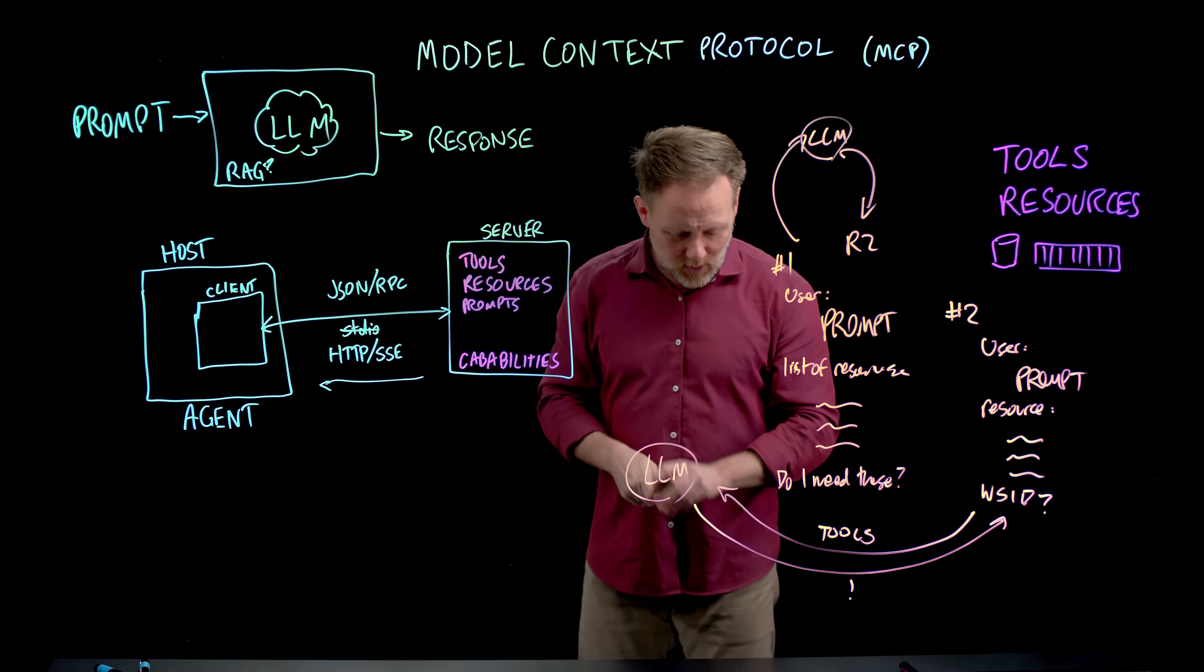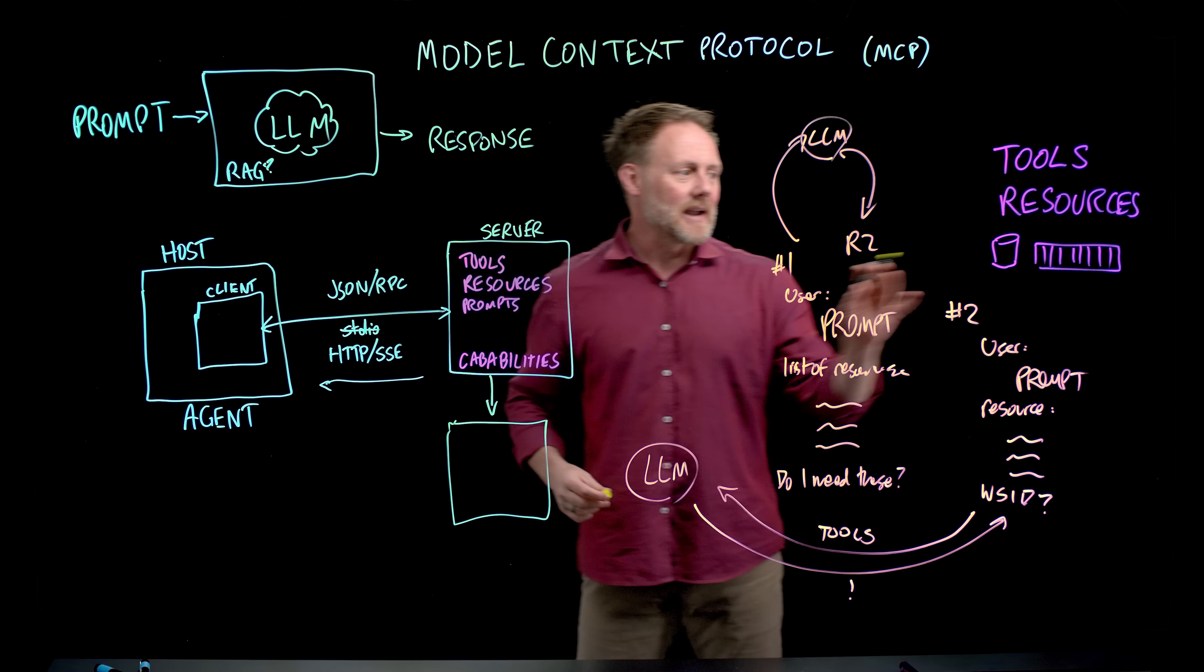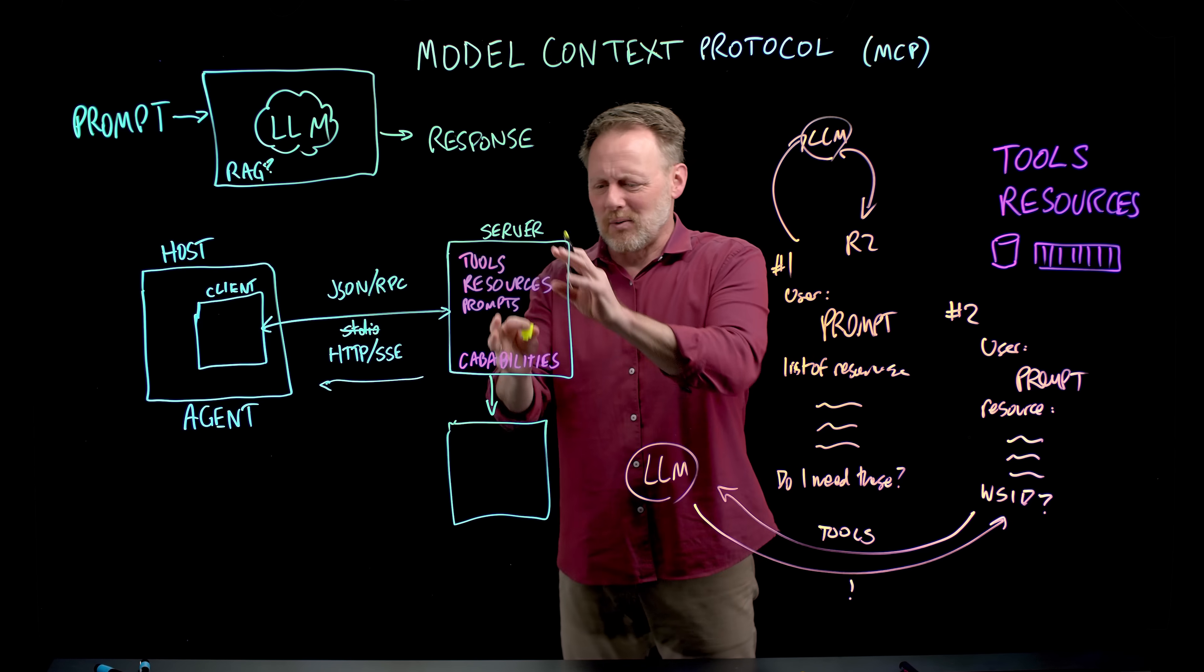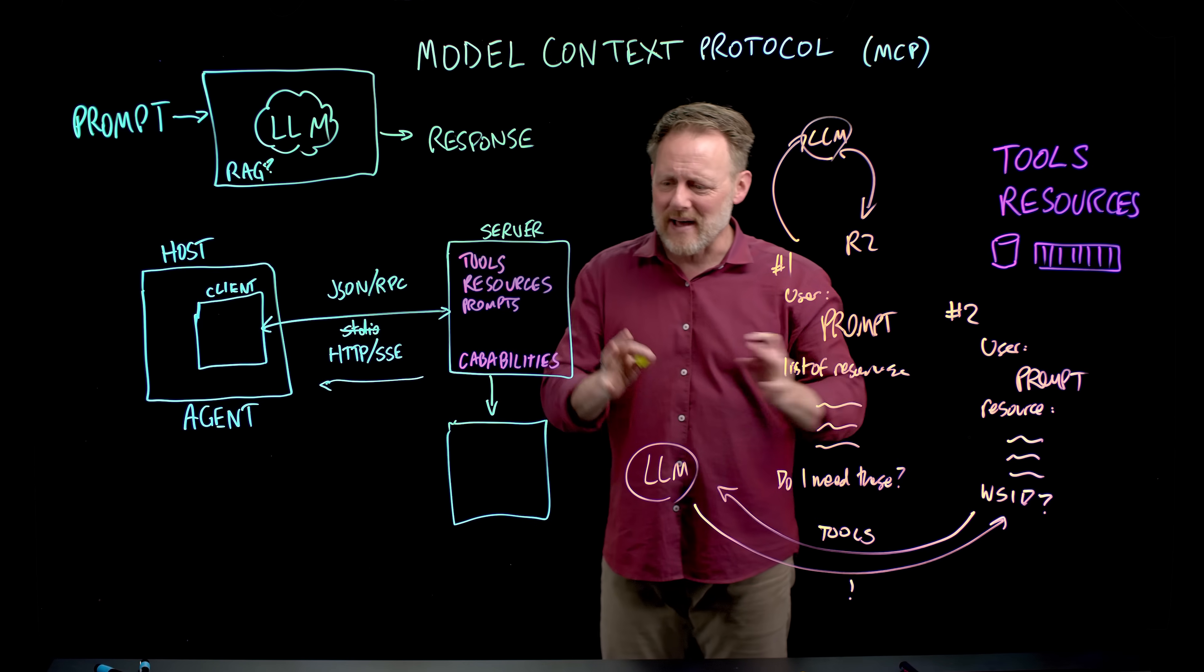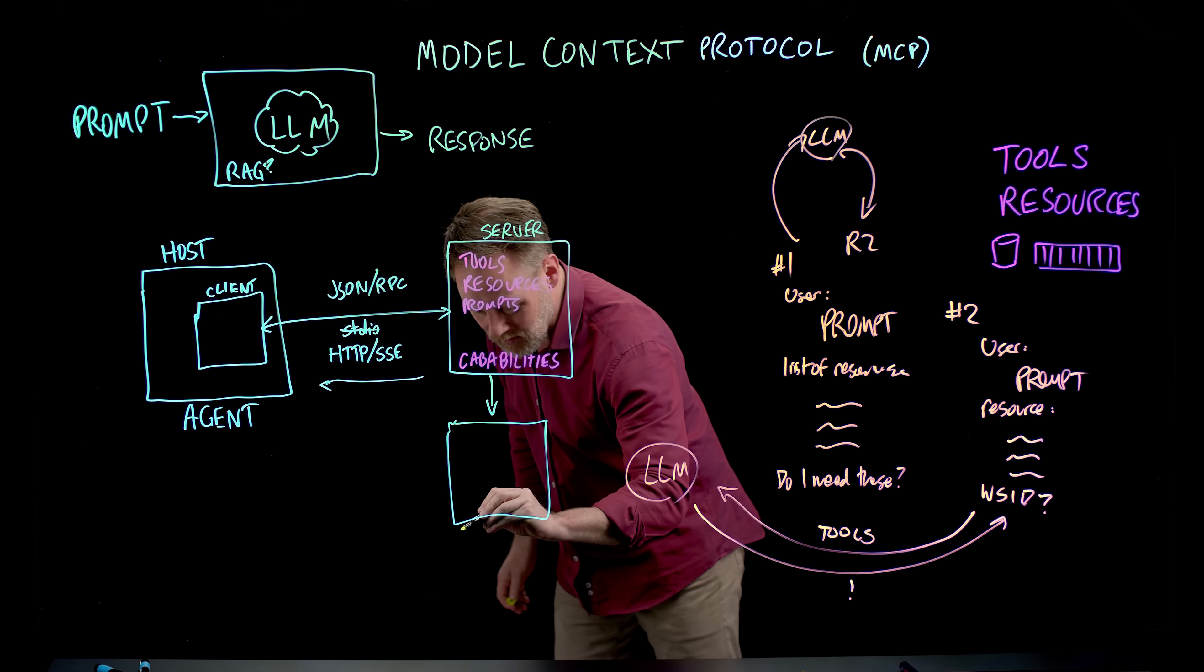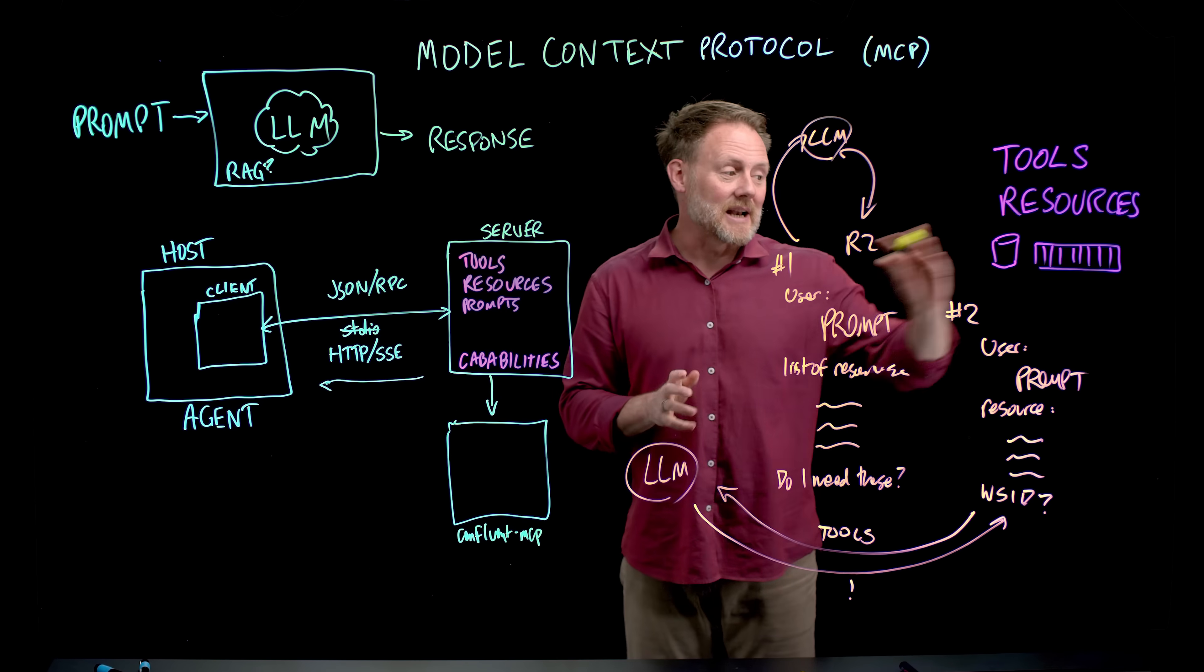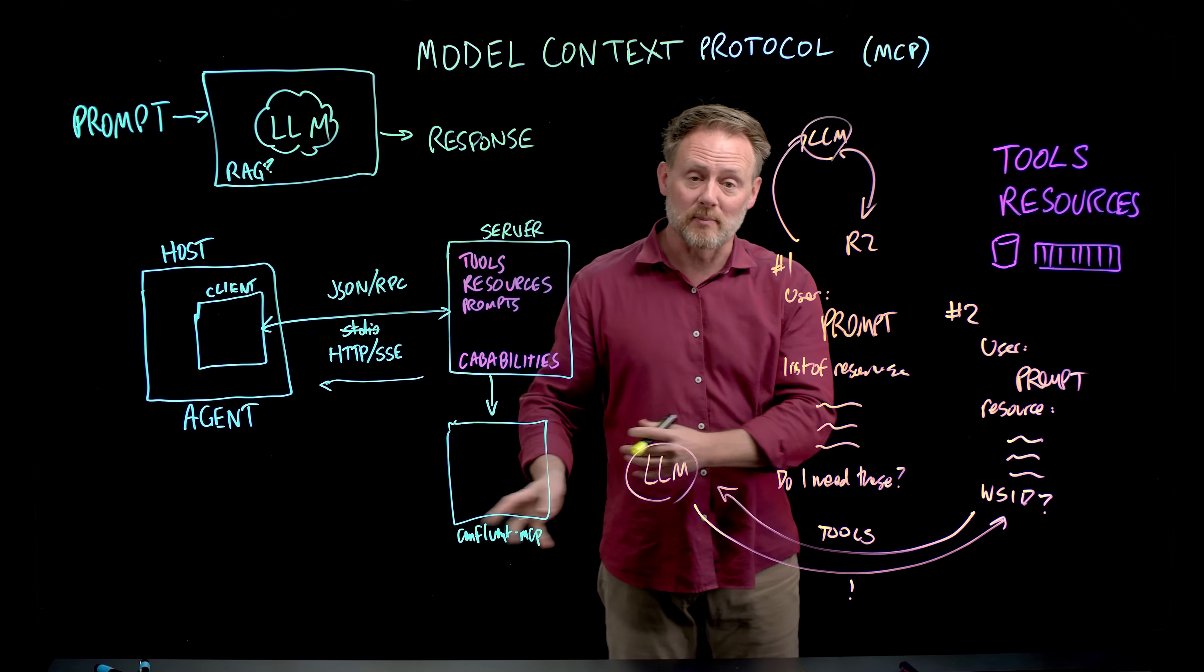They're also composable. The server itself can be a client. So let's say I had some data source that I knew was in Kafka out there and I don't want to go write a bunch of extra Kafka code to go do that in here. Well, I can just then go use, say, the Confluent MCP server and connect to that topic or even do actually a bunch more stuff. It's a pretty cool MCP server.